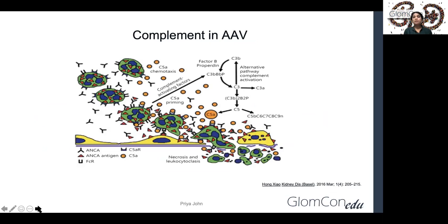Regarding the role of complement in ANCA-associated vasculitis, neutrophil activation releases C5A, which when bound to the C5A receptor activates the alternative complement pathway, producing membrane attack complex that damages the vascular endothelium. C5A also recruits further neutrophils, which further release C5A, setting up an amplification loop.